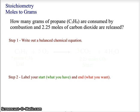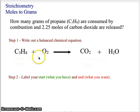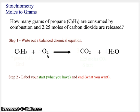Now let's look at a second sample problem: how many grams of propane, C3H8, are consumed by combustion when 2.25 moles of carbon dioxide are released? We are combusting propane, releasing 2.25 moles of CO2, and trying to find how many grams of propane were originally consumed. Again, we need to begin with a balanced chemical equation. In combustion, propane burns in O2 — one of the diatomics — and always produces carbon dioxide and water.